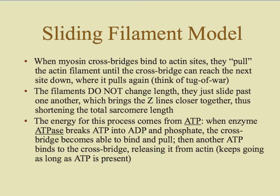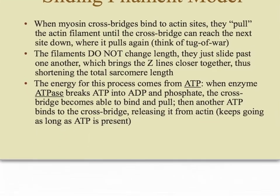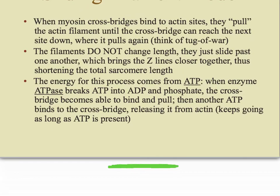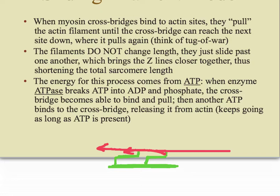When the myosin cross bridges attach to the actin, they form little bonding sites — one cross bridge grabs onto that actin, then ratchets over and pulls the actin in that direction. Think of it like a clothesline hanging between two buildings: if you wanted to bring the clothesline closer you would grab and pull with one hand, then the next hand, alternating until the rope got closer and closer. That's very similar to what the myosin and actin do.